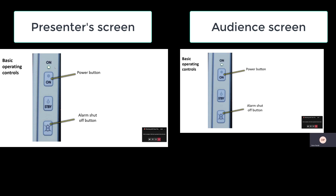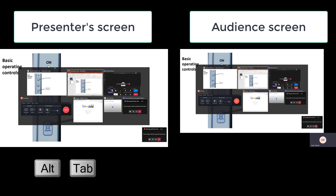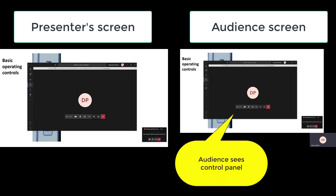Now, the disadvantage is I can't see any of the detailed Teams controls. I have the little box down at the bottom in the corner, which really gives me on and off of the audio and video and I can stop. But if I wanted to go back to the control panel, I have to use Alt-Tab to get back to the Teams control panel.